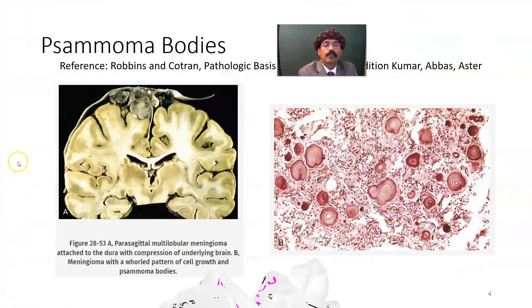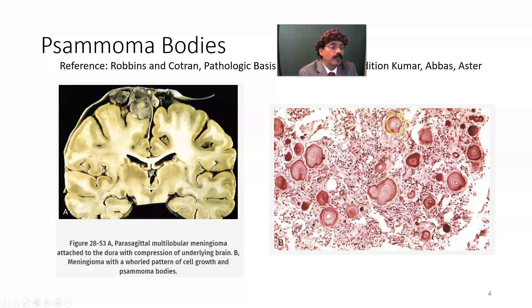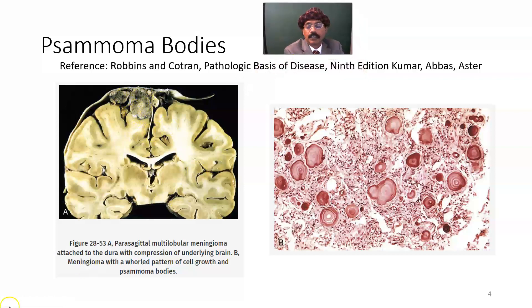This is the meningioma. On histopathology, we will find psammoma bodies here — tissue scrape is taken from the specimen. Psammoma bodies are a sign of dystrophic calcification.